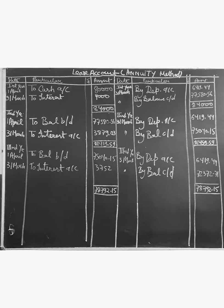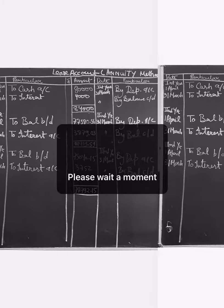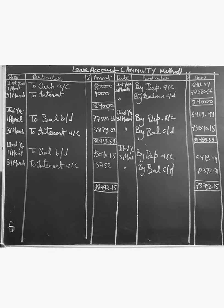Now let's move to the question. Here you can see, to cash account, first of all we have purchased 80,000.